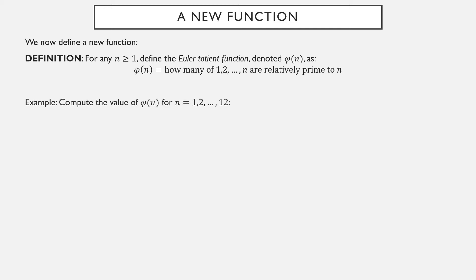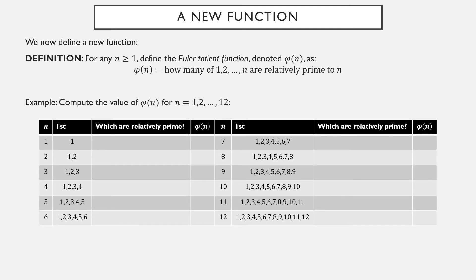So let's work through computing φ(1), φ(2), all the way up to φ(12). I've made a table where I've preemptively filled in not just the numbers 1 through 12, but for each number I've listed out 1 through n — so 1 and 2, 1 through 3, 1 through 4, 1 through 5, and so forth. Now out of each list, which numbers satisfy that they are relatively prime to n?